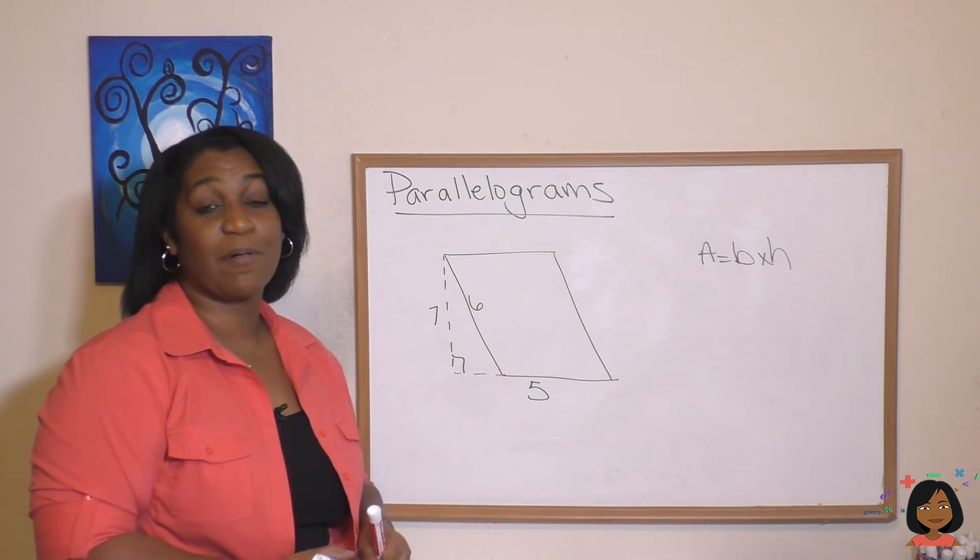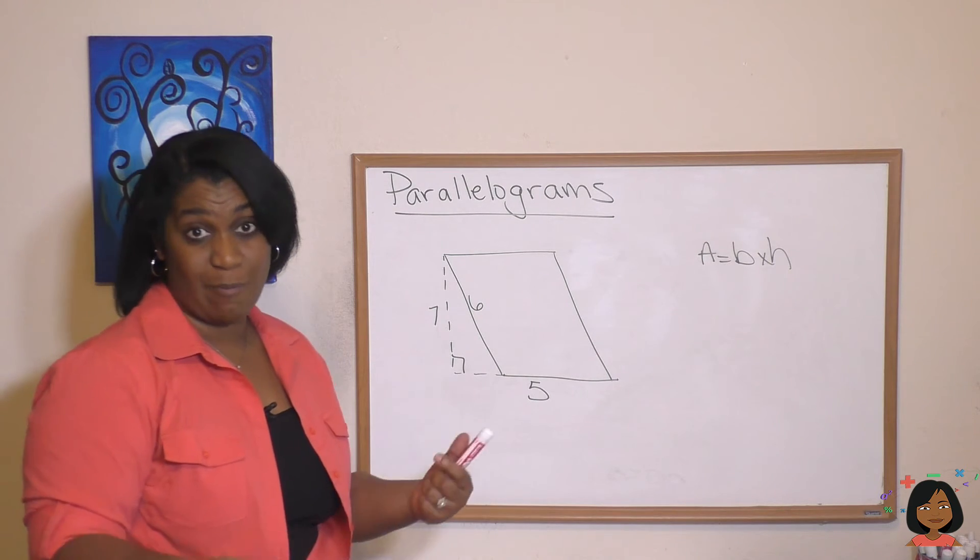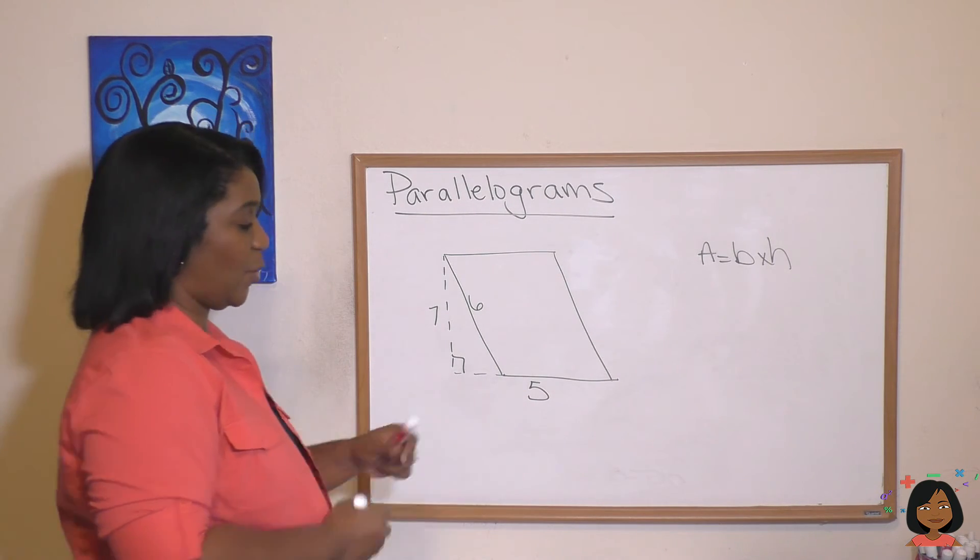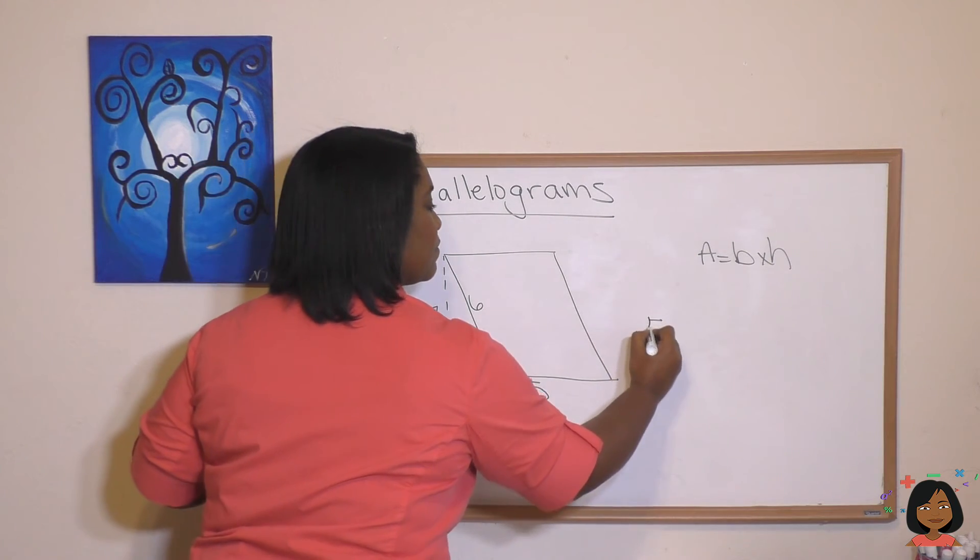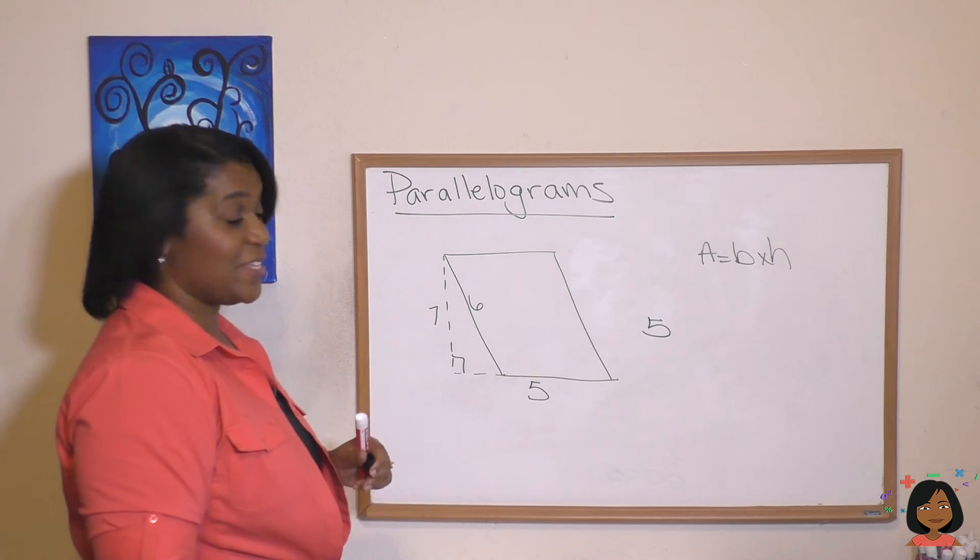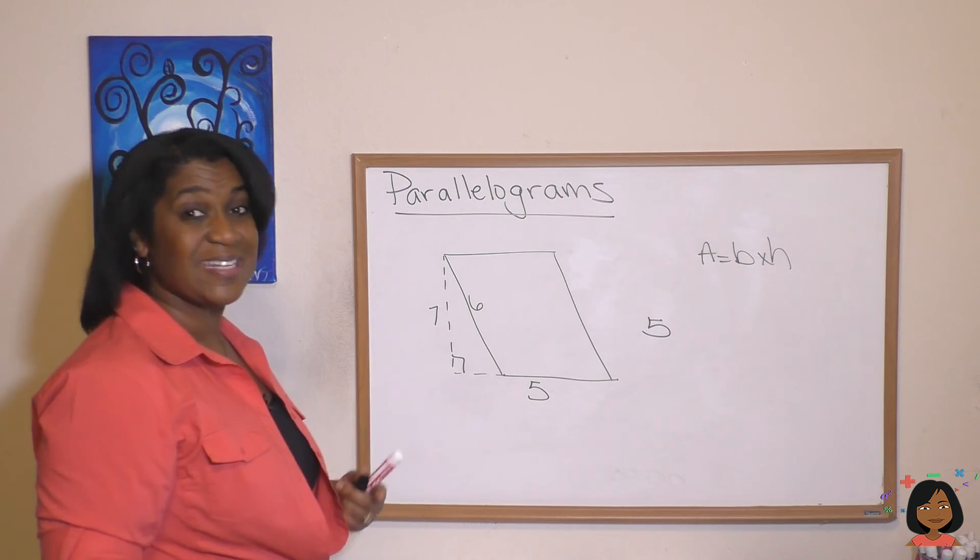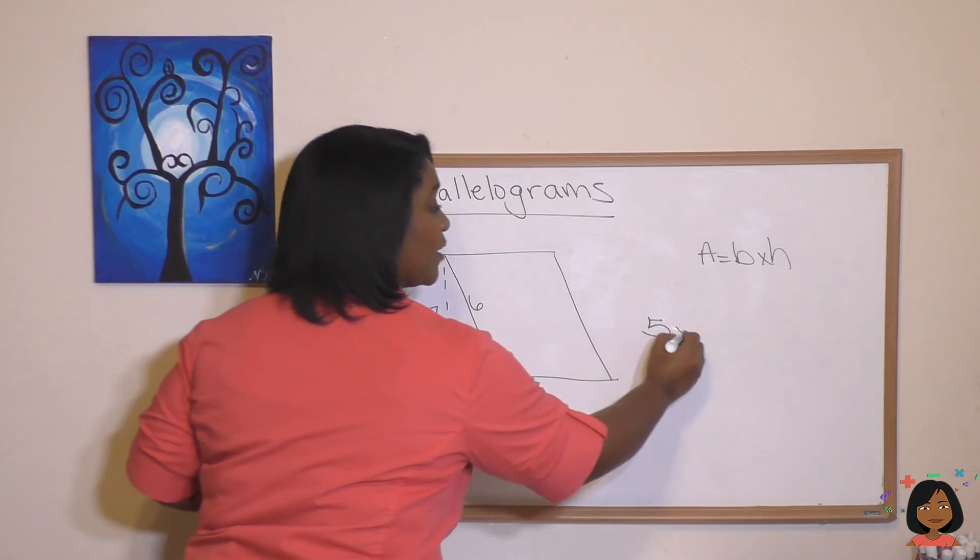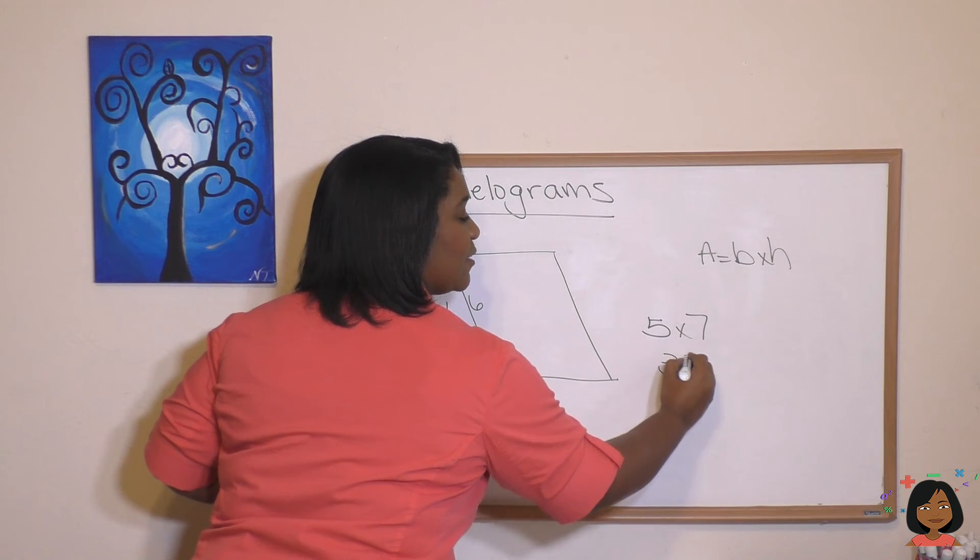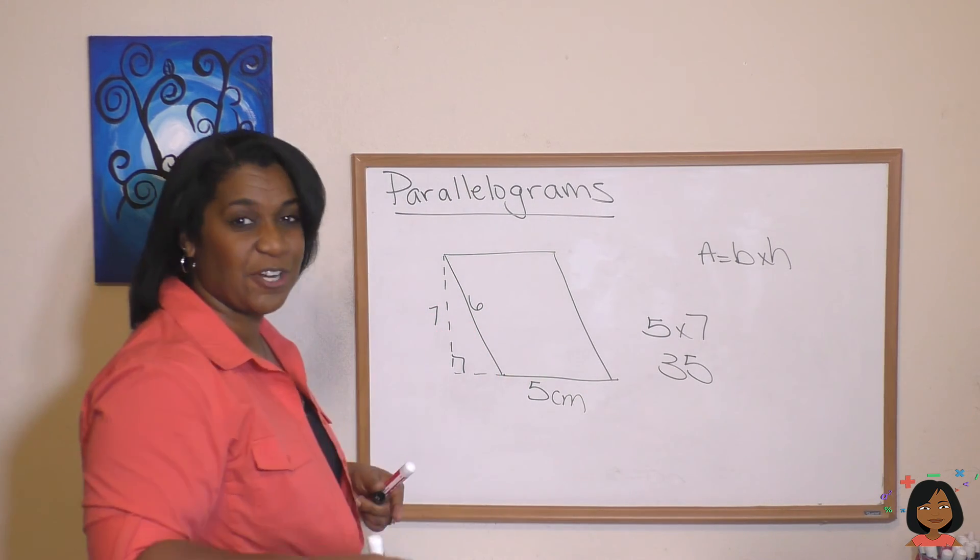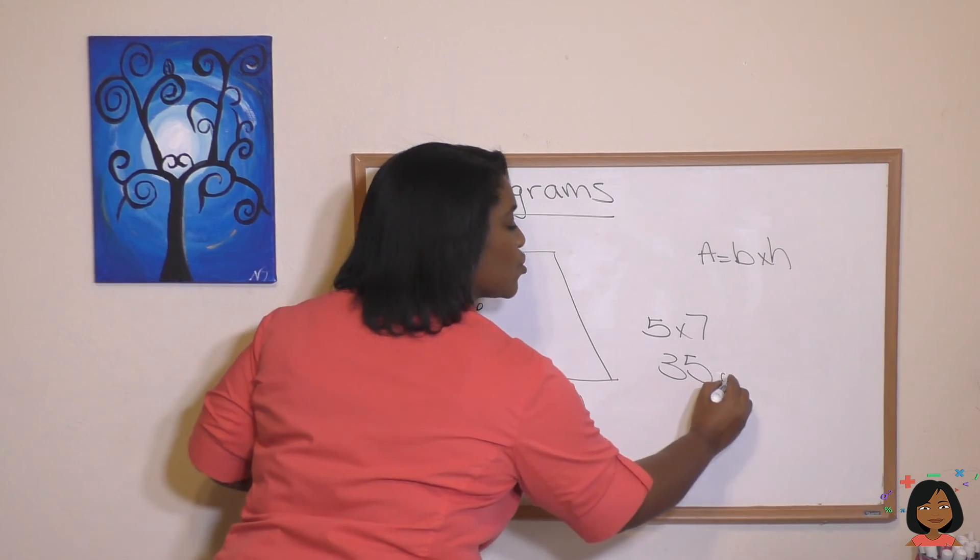So area equals base times height. Take a look at this example: we want to find the area of this parallelogram. Remember the formula: area equals base times height. So our base is going to be 5, and our height is going to be 7. That's where that dotted line is that drops in that 90-degree angle. Five times 7 is 35. I forgot to give you a label again: 35 centimeters squared.